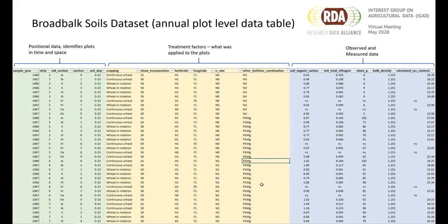In more detail, this is the Broadbalk soils dataset, providing annual plot level data. The data has a clear structure: the blue columns contain the observed and measured data, the green columns are positional fields identifying plots in time and space, and the yellow columns identify the different treatment factors applied to each plot. This structure is repeated across datasets, which means users can know what to expect every time they open a dataset, and it allows users to more easily link together and use the datasets.